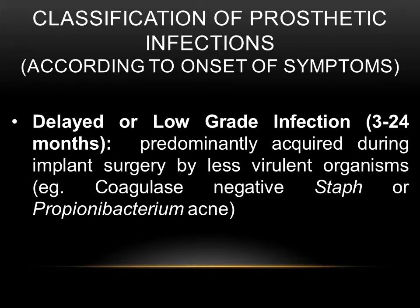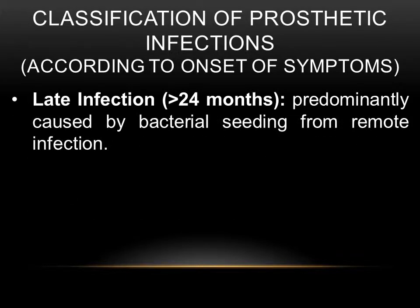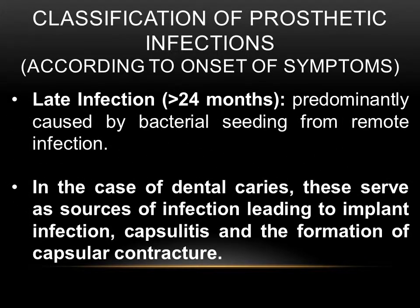Delayed or low-grade infections, with symptoms occurring between three and 24 months from the date of surgery, are predominantly acquired during implant surgery by less virulent organisms such as coagulase-negative Staph epidermis. Late infections, with symptoms occurring greater than 24 months from the date of surgery, are predominantly caused by bacterial seeding from remote infections. In the case of dental caries, these serve as sources of infection leading to implant infection, capsulitis, and the formation of capsular contracture.